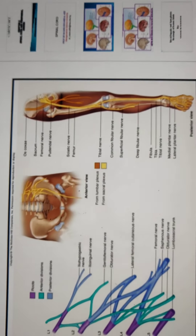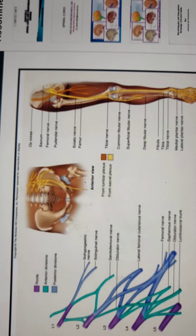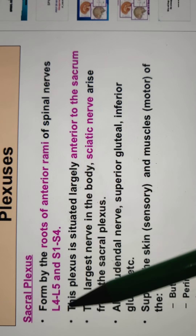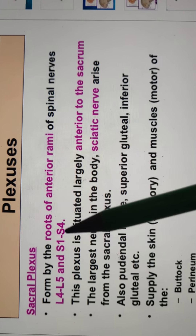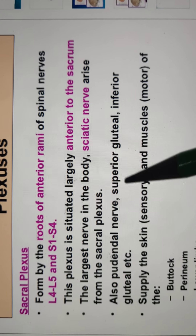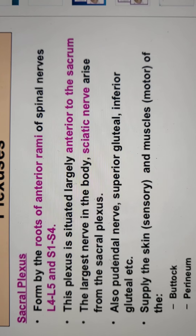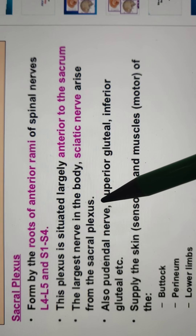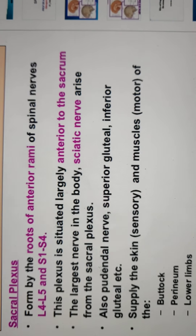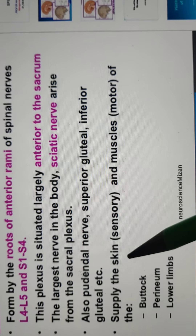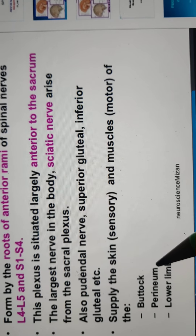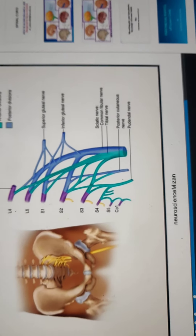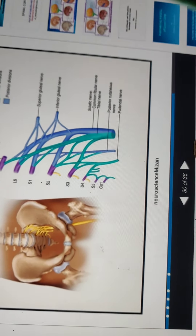The sacral plexus is formed by L4 to L5 and S1 to S4. It contains the sciatic nerve, which is the largest nerve in the body, arising from the sacral plexus. It supplies the skin — sensory — and muscles — motor — of the buttocks, the perineum, and the lower limbs.